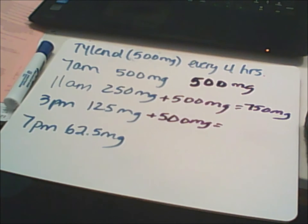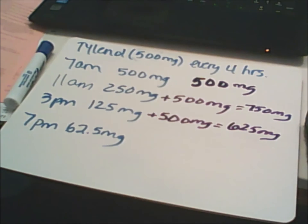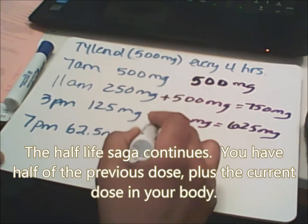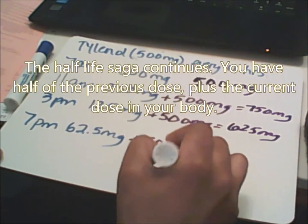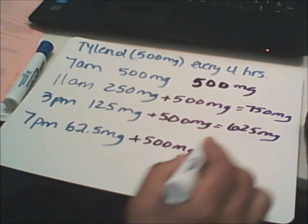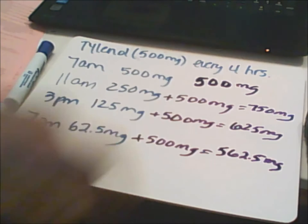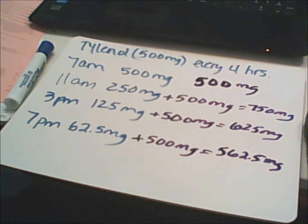At the next half-life point you're going to end up with 125 milligrams plus the new tablet, giving you 625 milligrams. Then taking your pill on schedule again, you'll have half of what you had before plus the new dosage, giving you 562.5 milligrams plus a little more from the prior half-life of the previous medication dosage.